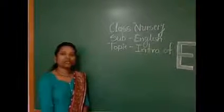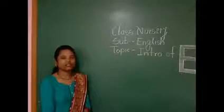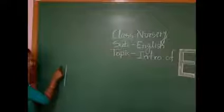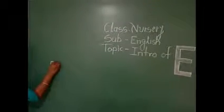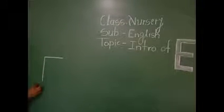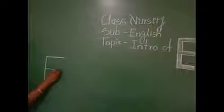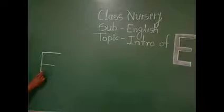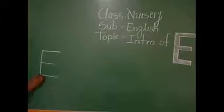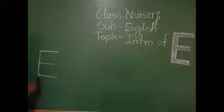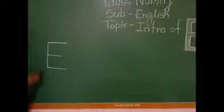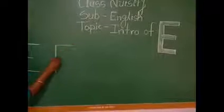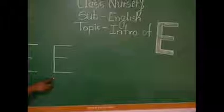Ok kids, now I will teach you how to write letter E. Are you ready to learn? First we have to draw a standing line. Then from the top of this standing line draw a sleeping line. Then from the middle of this standing line draw again a sleeping line. Draw it properly and this line should be smaller than the first one. Then again draw a sleeping line at the bottom. Draw it properly. Now it becomes letter E. Standing line, sleeping line, sleeping line, sleeping line — E. E, elephant.